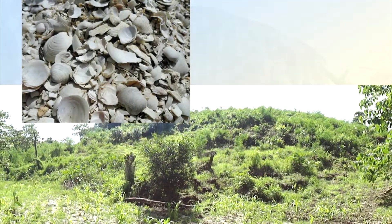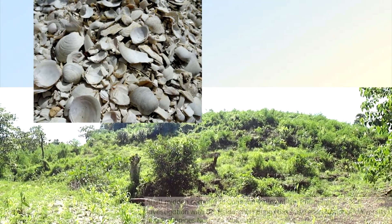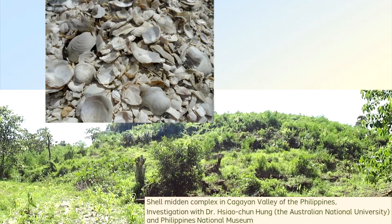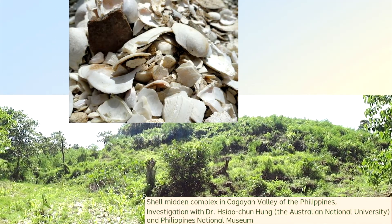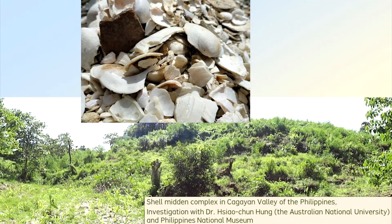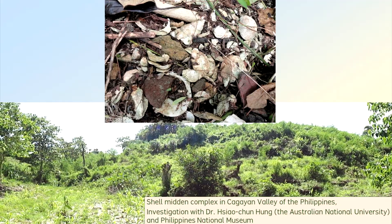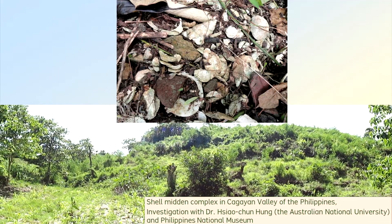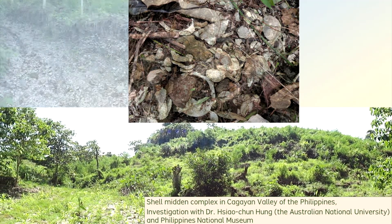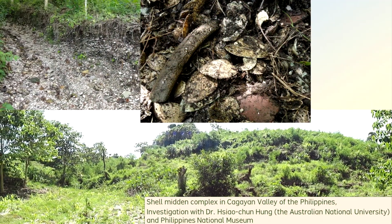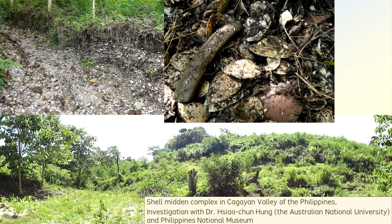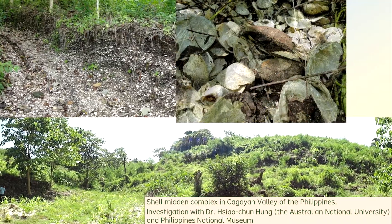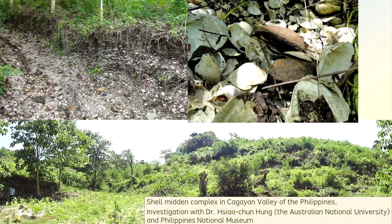Most shell middens or shell mounds contain at least some amounts of other findings, such as broken pottery, stone tools, and animal bones or teeth. When viewed at a large scale, shells are the major visible components.